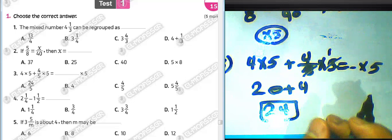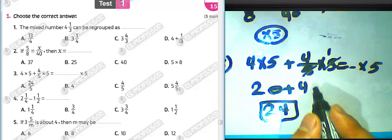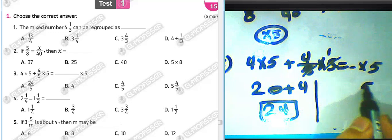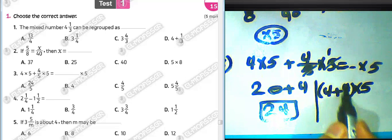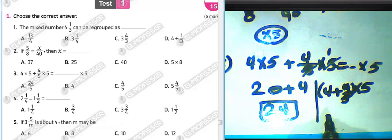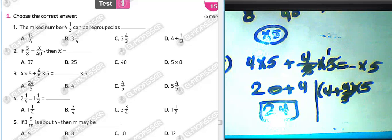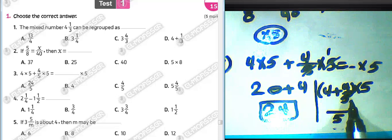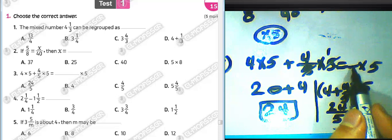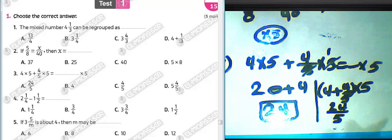We can use the distributive property for this example. Write five outside, and we have four and four over five inside. We can convert from mixed number to improper fraction: four times five equals twenty, twenty plus four equals twenty-four, so we write twenty-four over five.